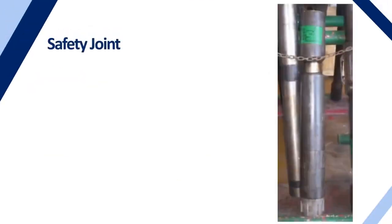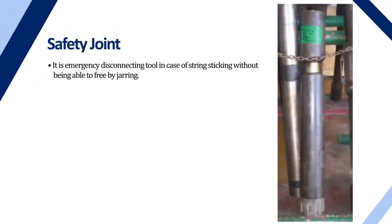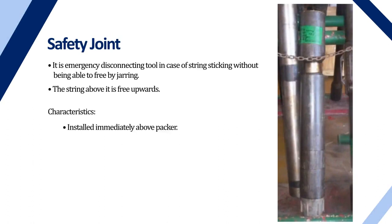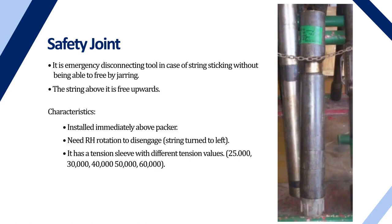Safety joint: it is an emergency disconnecting tool in case of string sticking when it cannot be freed by jarring. The string above it is freed upwards. It is installed immediately above the packer. Right-hand (RH) rotation is needed to disengage — the string turns to the left. It has a tension sleeve with different tension values: 25,000; 30,000; 40,000; 50,000; and 60,000.